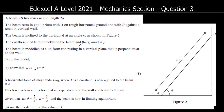The coefficient of friction between the beam and the ground is mu. The beam models a uniform rod, so the weight acts halfway along — distance a from each end. The weight is mg, and since it's uniform it acts at distance a from A on each side. The uniform rod rests in a vertical plane perpendicular to the wall.